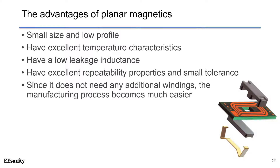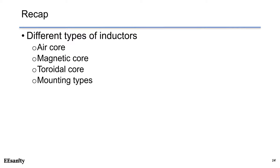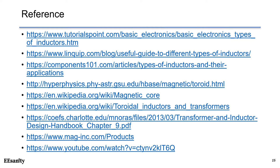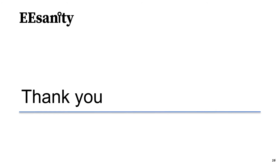Planar magnetics also do not need any additional windings, making the manufacturing process much easier. To recap, in this lecture we covered different types of inductors including air-core inductors, magnetic core inductors, toroidal core inductors, and also different mounting types. Here are the references for this lecture. Thank you and see you next time.